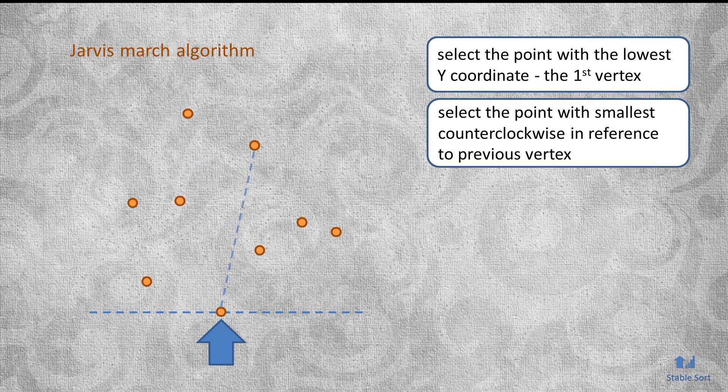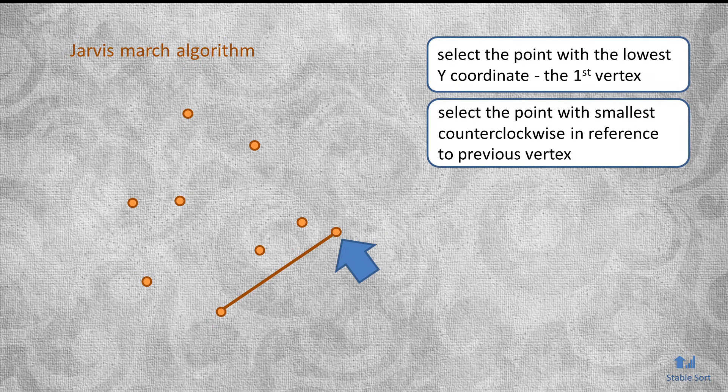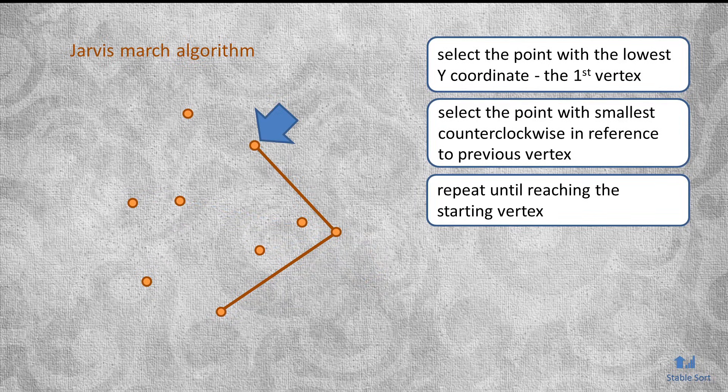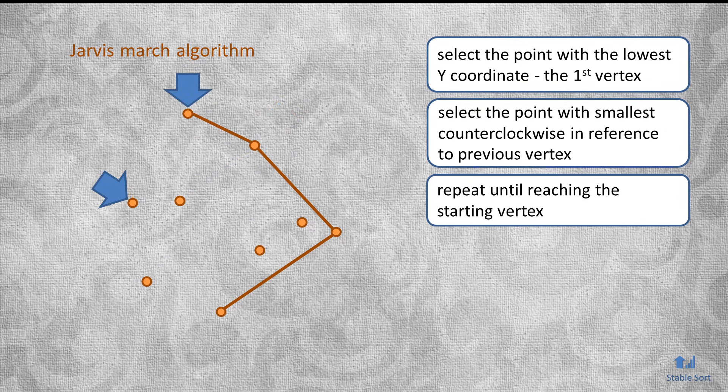But then, instead of doing any kind of sorting, it just loops through all the points again in a brute force way to find a point that makes the smallest counter-clockwise angle in reference to the previous vertex. It simply repeats this iteration through all of the points until all of the vertices are determined, and it gets back to the starting point.